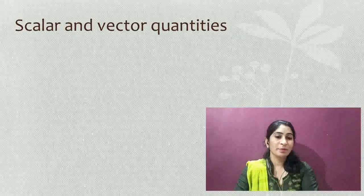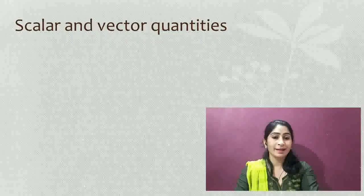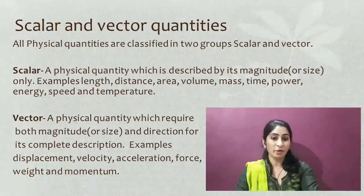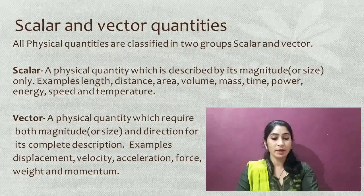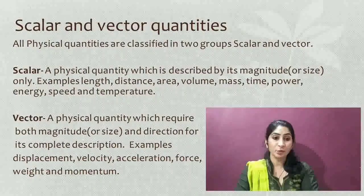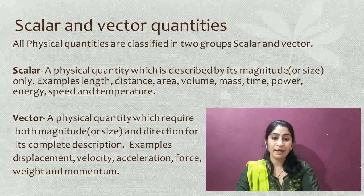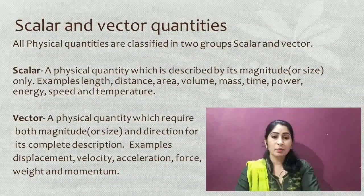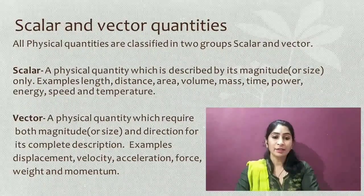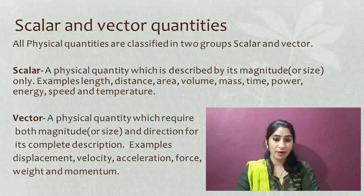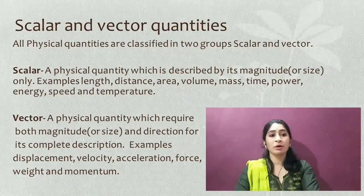Now we will discuss about a very basic topic — scalar and vector quantities. All physical quantities are classified into two groups: scalar and vector. A scalar quantity is a physical quantity which is described by its magnitude only — that is its size or numerical value. Examples of scalar quantities are length, distance, area, volume, mass, time, power, energy, speed, and temperature. In these quantities, only magnitude is required; there is no need for direction. So these are called scalar quantities.